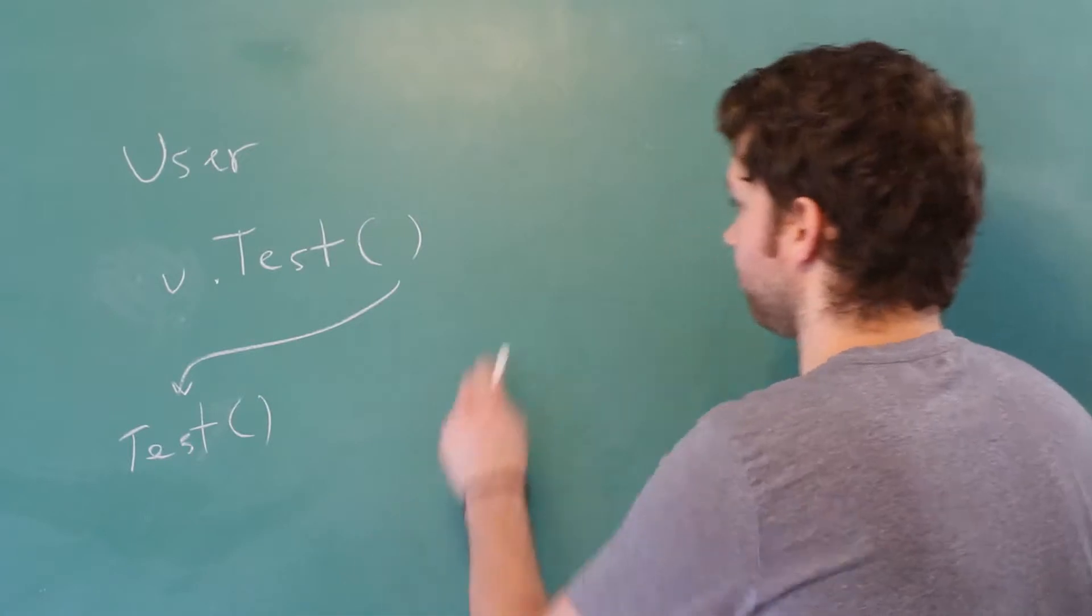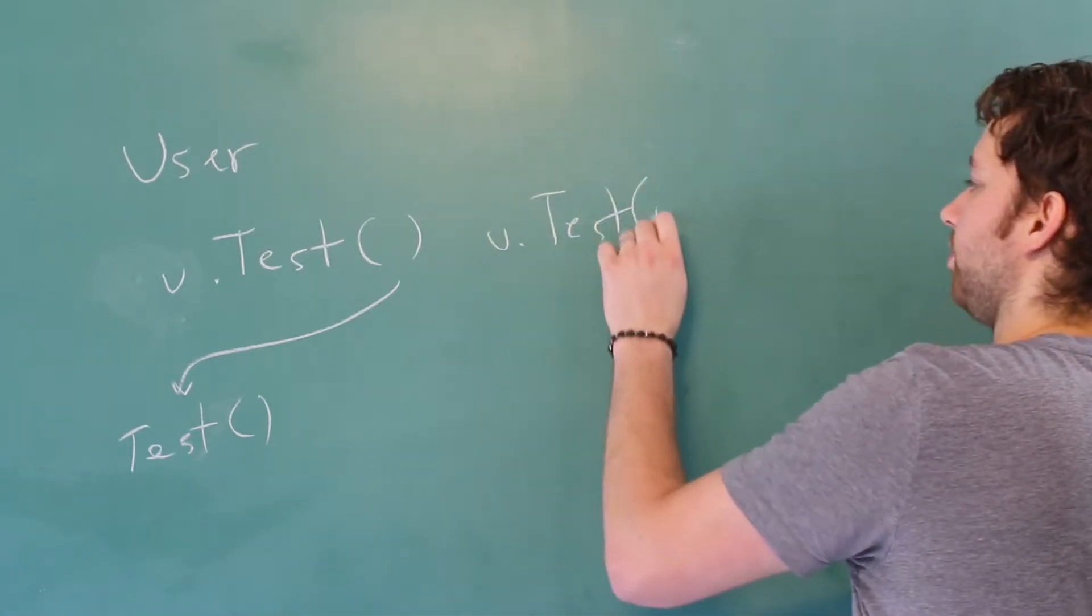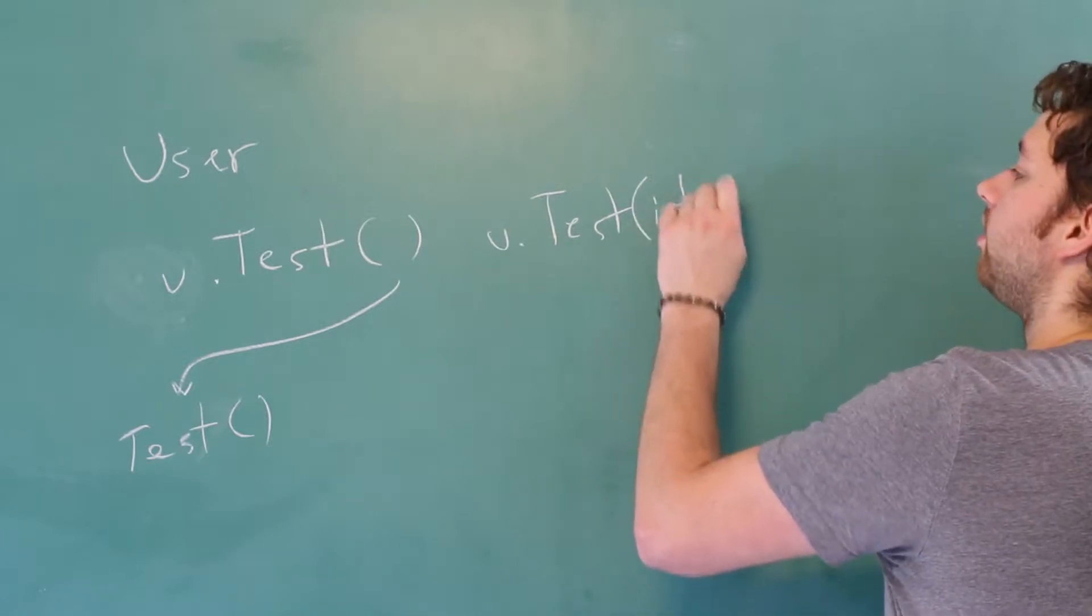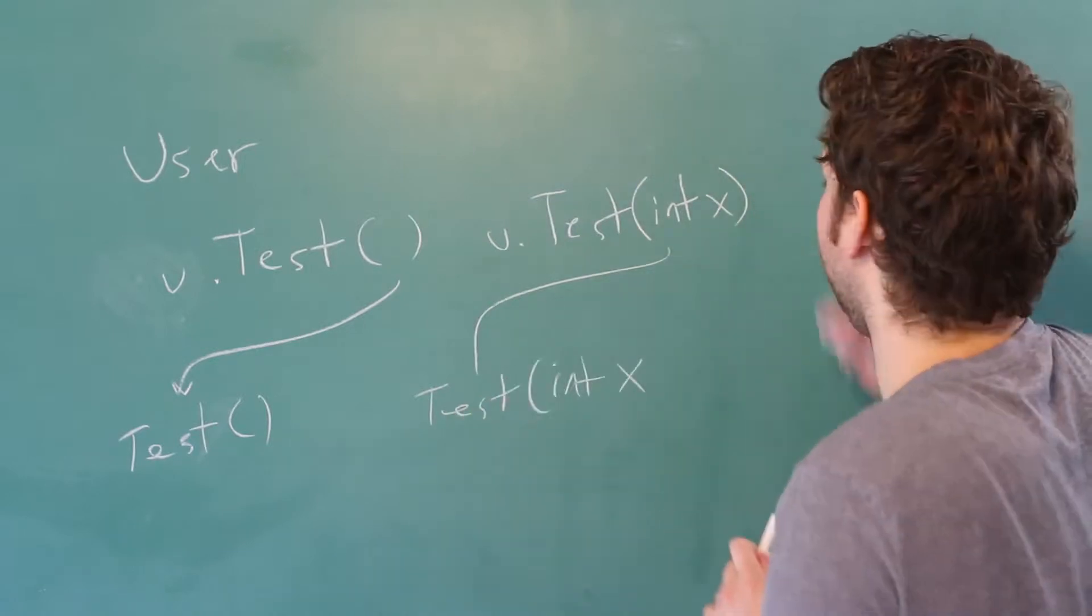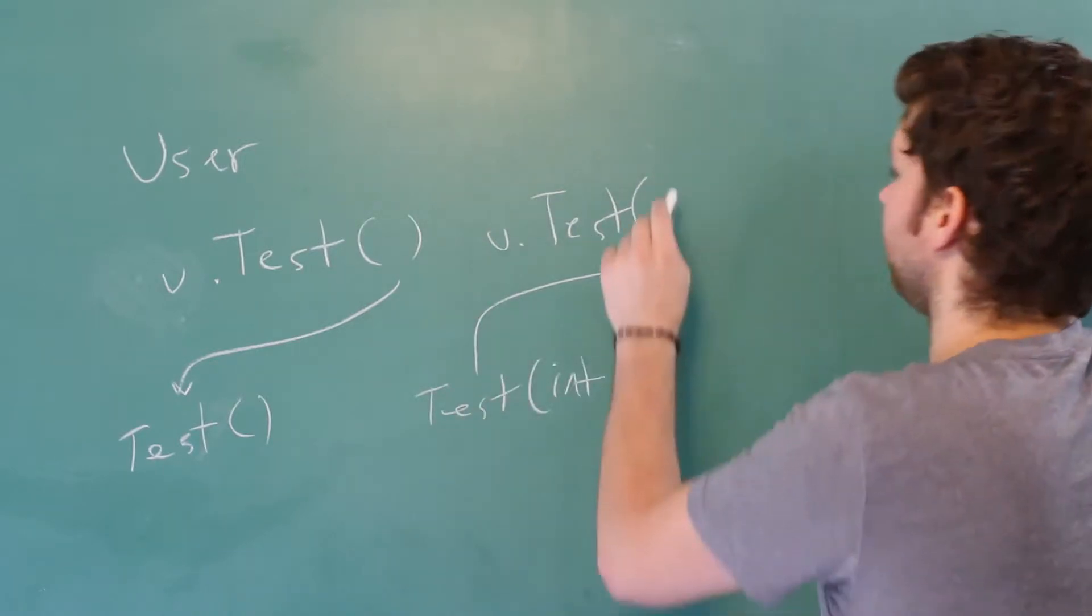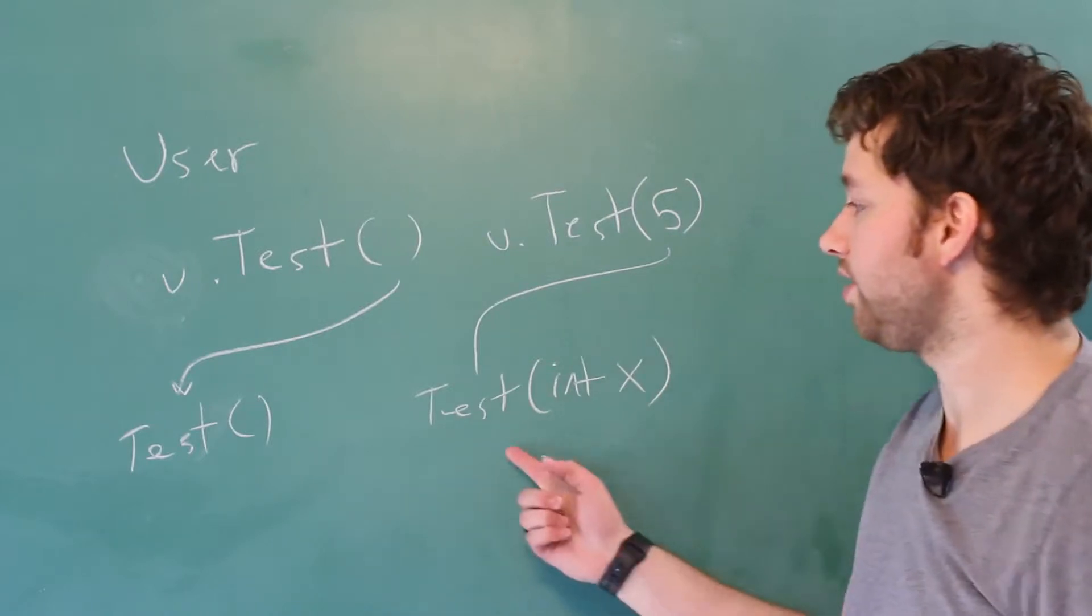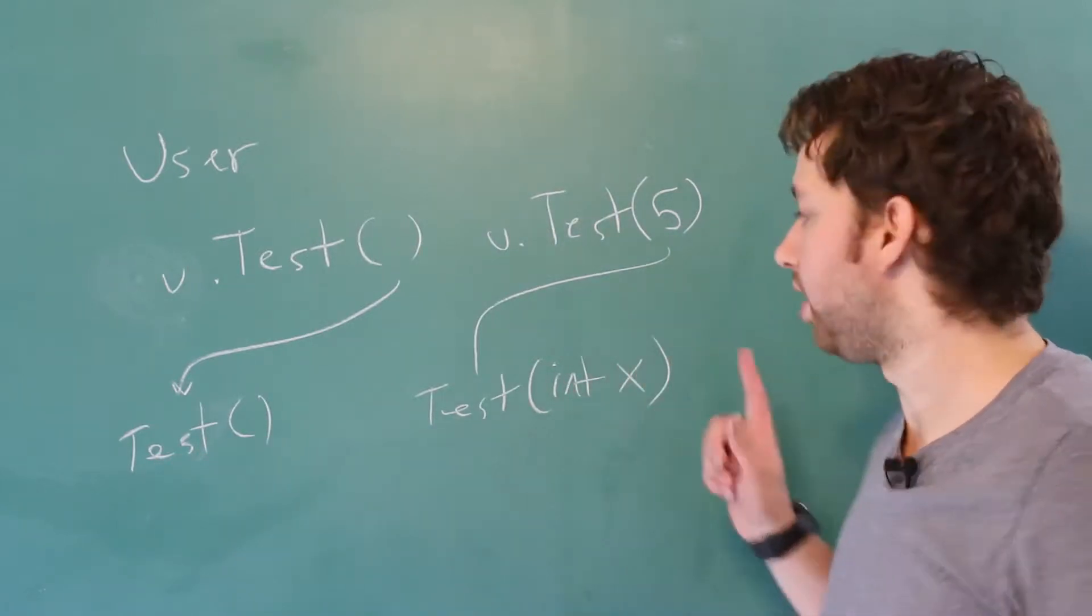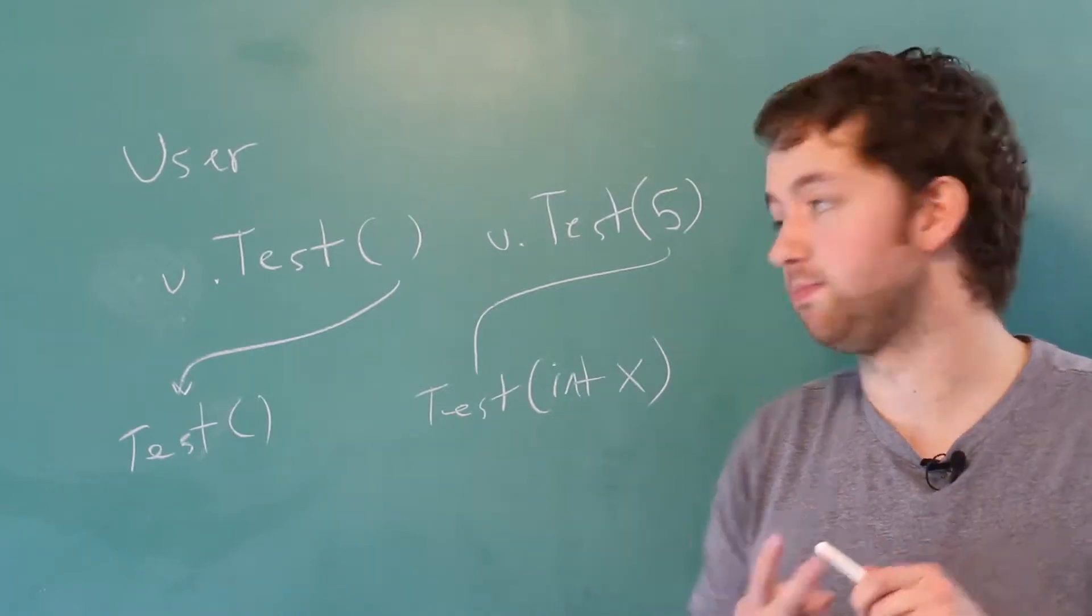But we also might have another version which is going to take an integer like so, and that's going to go to a different version of test. We could pass in a value, for example we could pass in five. That's going to go to this version. You can see they have the same exact name, but they're a little bit different because they either have different number of parameters or different types.